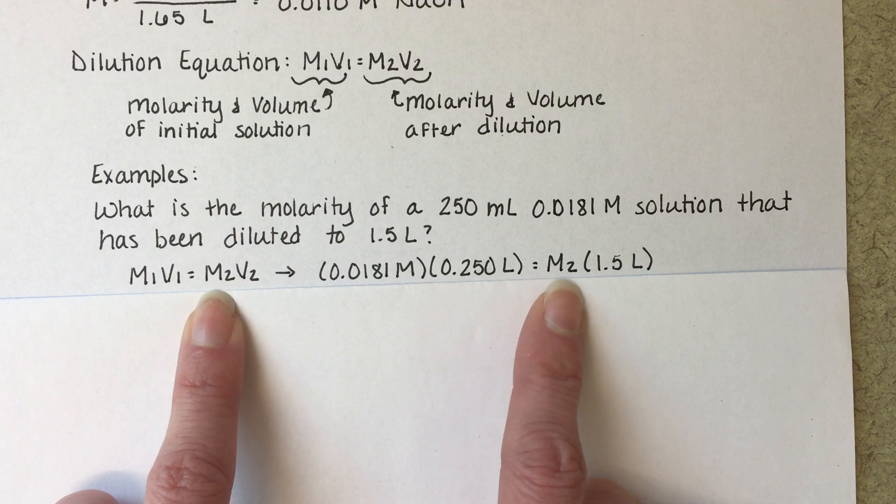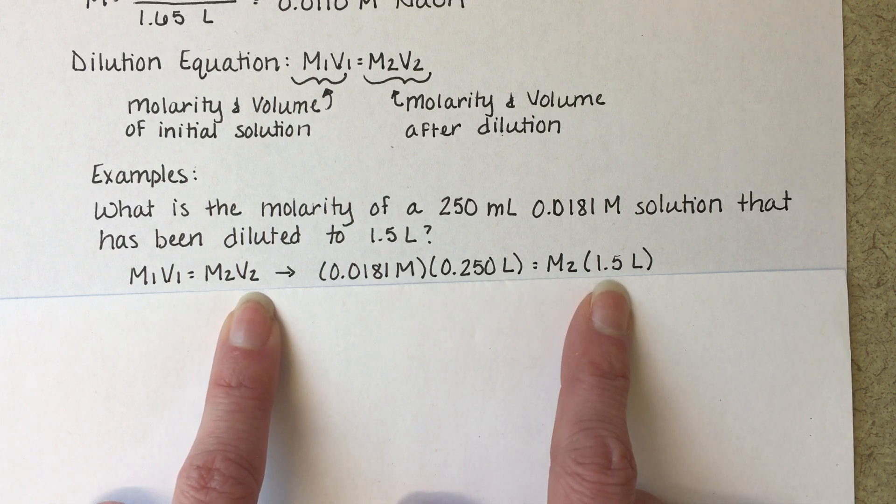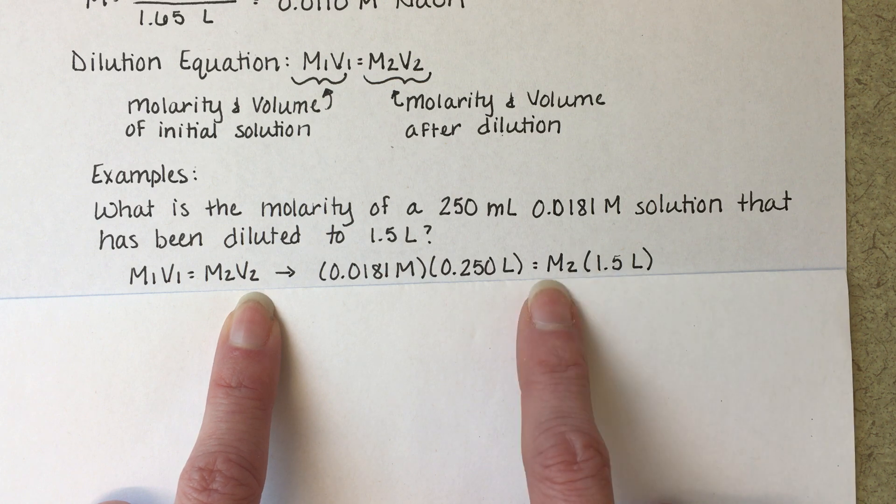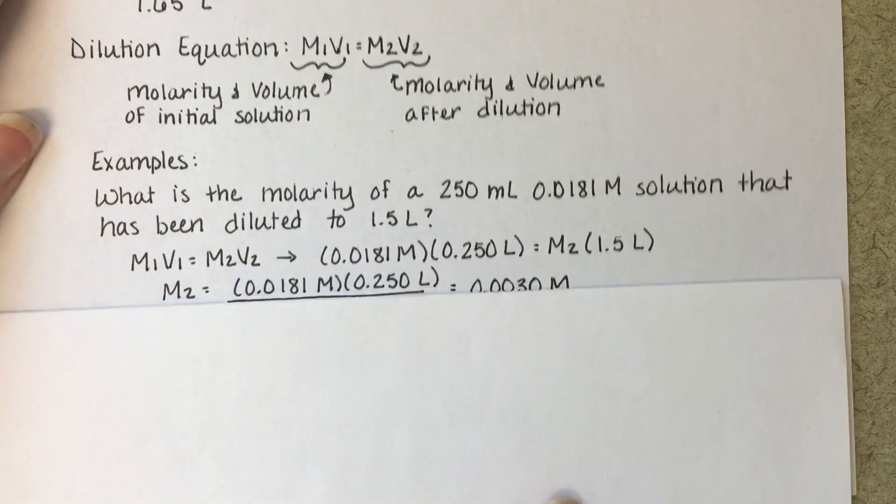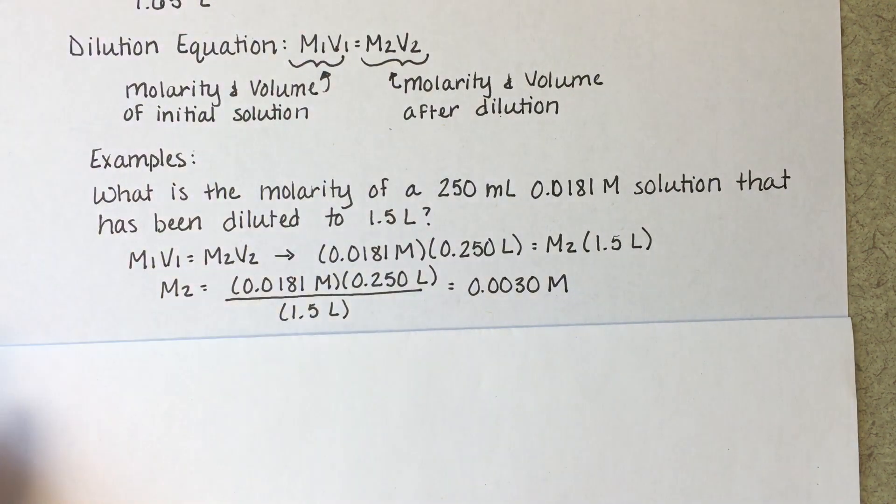So here's the dilution equation. We've plugged in our initial molarity and our initial volume. I've chose to express it in liters. M2 is what we're solving for. V2, our final volume, 1.5 liters. We just need to rearrange this equation to isolate M2 and then solve for M2. And that's it.